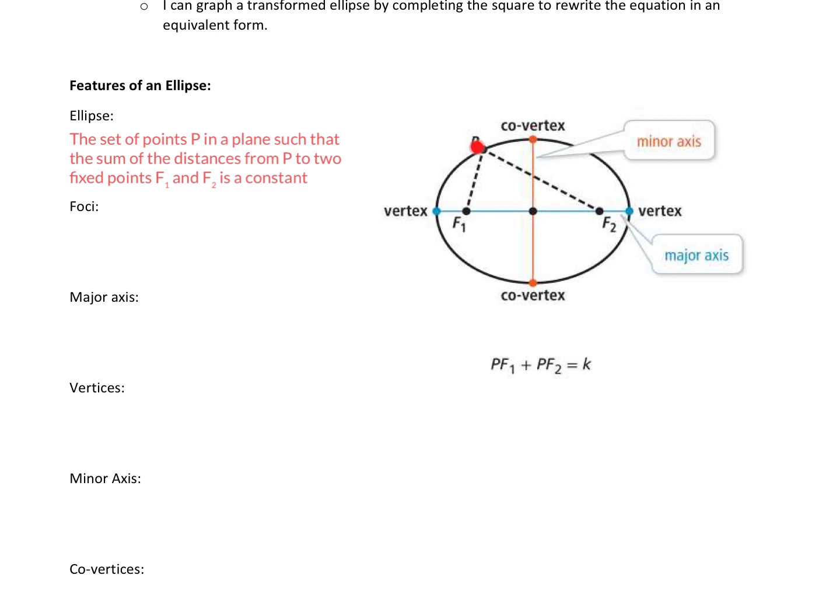So what we're saying is that we've got point P. This distance plus this distance equals a number. Every single point, so let's say we have a point over here, let's say this is where point P is.